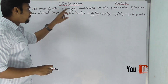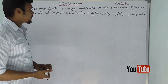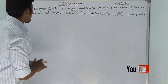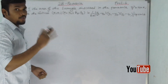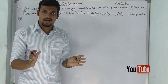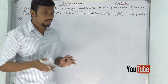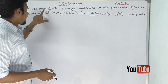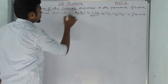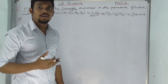Prove that the area of a triangle inscribed in a parabola. So we have to prove this. When we get a 'prove that' question, we have to divide the process. The area of the triangle — we need to apply the formula for the area of the triangle.